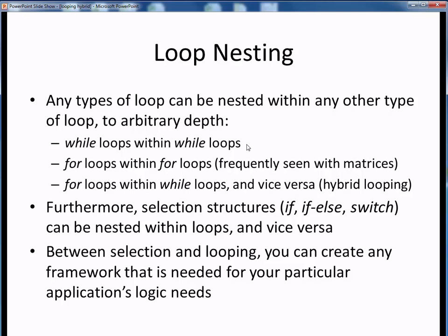For example, we can nest while loops within other while loops, or we can nest for loops within other for loops, which is frequently seen with any type of matrix applications. We can also design any type of hybrid looping we wish — for example, for loops inside of while loops, or vice versa. Furthermore, we aren't limited to keeping looping and selection separate from each other. In fact, we can nest any one of these selection structures within for or while loops, or the converse. We can combine any type of selection together with any type of looping to create any type of code framework imaginable to express our application's specific logic needs.